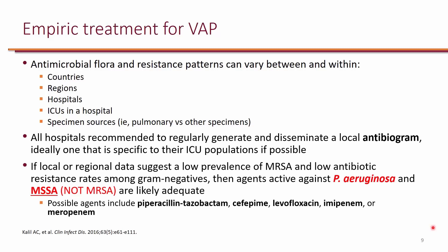One key recommendation from the guideline is that while we want to empirically cover for Staphylococcus aureus, if based on local resistant patterns it's unlikely to be MRSA, it's probably okay to just cover for MSSA instead. In real world practice, most physicians would cover MRSA in patients with VAP, but the guideline makes the point that if resistance patterns suggest MRSA is unlikely, targeting MSSA alone is acceptable.